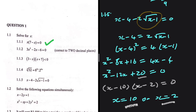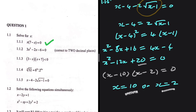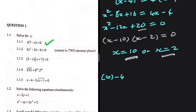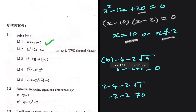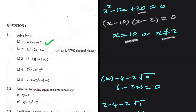Squaring both sides can introduce solutions that aren't true in the original equation. Substituting x equals 10: 10 minus 4 minus 2 times the square root of 9 gives 6 minus 2 times 3 equals 0. So x equals 10 holds. Substituting x equals 2: 2 minus 4 minus 2 times the square root of 1 gives negative 2 minus 2, which does not equal 0. So x equals 2 is not a valid solution. We need to be aware of this whenever we square both sides.